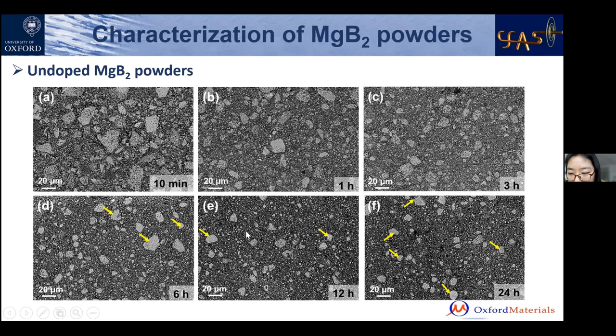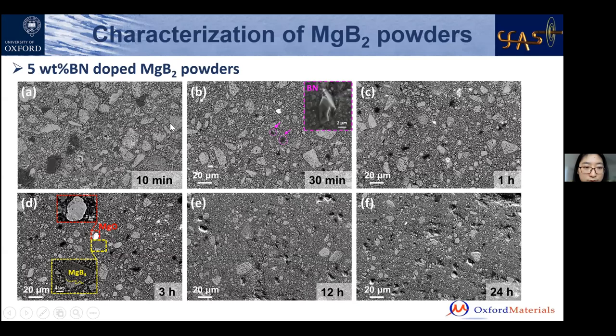If we add boron nitride into the powders, not only are MgB₂ particles reduced in size, but the boron nitride particles themselves are also minimized in size. Boron nitride particles in backscattered electron images show the darkest contrast.